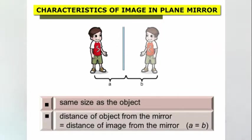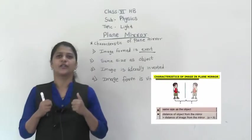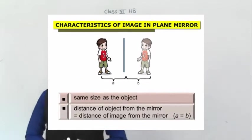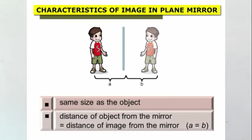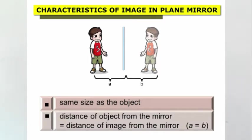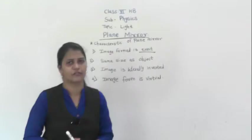Then you get the image as the same size of the object. When you are standing in front of the plane mirror, you get the same size — the image is not too small, not too tall, not too fat, not too thin. You get the same image as you are, the same size of the object.